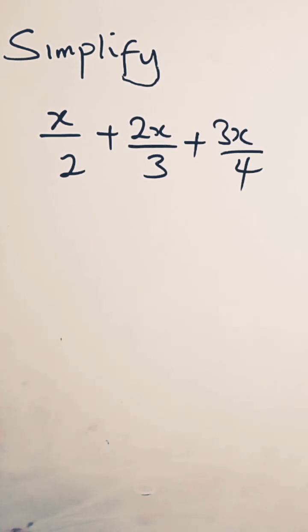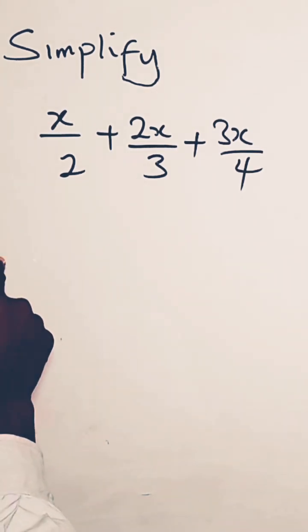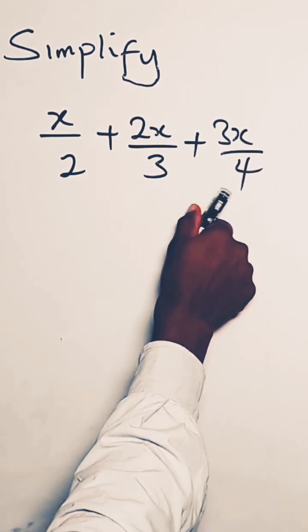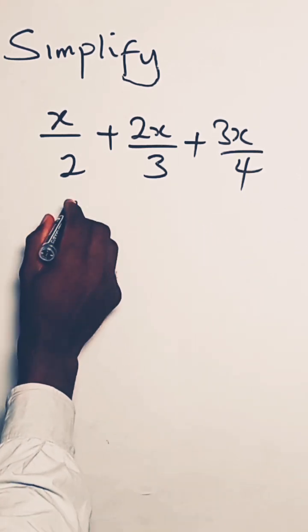The question says simplify this algebraic fraction. So we have x divided by 2 plus 2x over 3 plus 3x over 4. How do we do this?